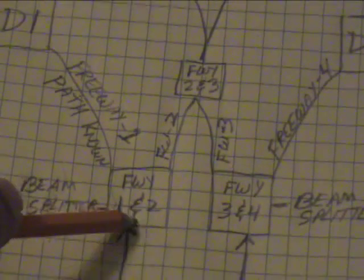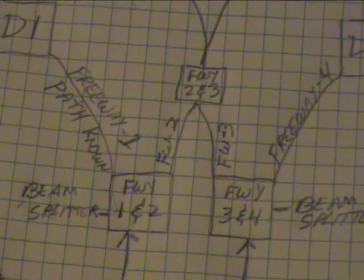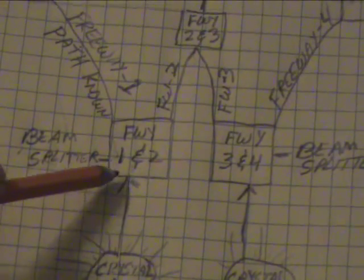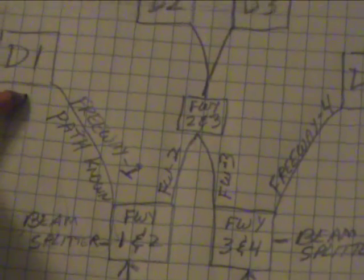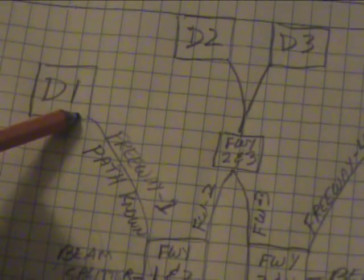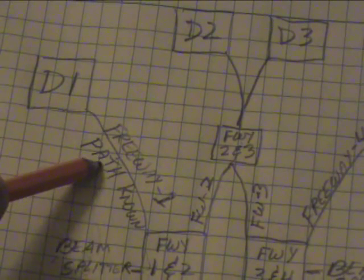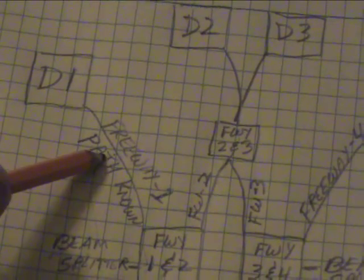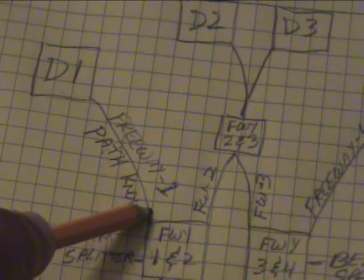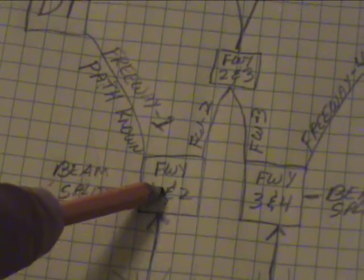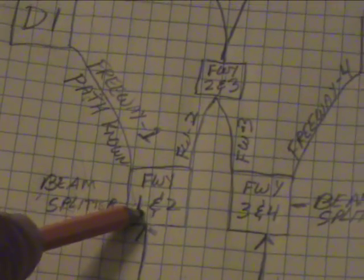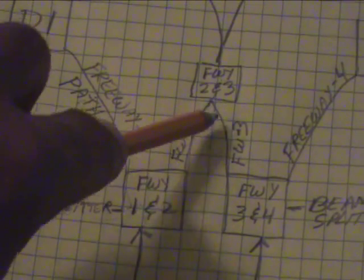So, this intersection right here, if it hits here and it goes directly over here, then we know that the path is known. Because if you follow this path right here, all the way down to this freeway intersection, this is a beam splitter before it goes this way.